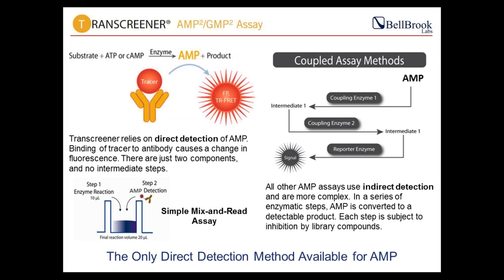What makes this assay unique? There are many assays out there for AMP and GMP detection. What makes our assay very unique is the ability to detect them directly — the antibody directly binds to the invariant product formed from any enzyme reaction: phosphodiesterases, ligases, or ectonucleotidases. In contrast, coupled assay methods require two or more enzymes to convert AMP into an intermediate and then another reporter enzyme to generate a signal. Any one of those enzymes could be inhibited by your compound library, requiring deconvolution of hits — a significant problem when working with a million-compound library.